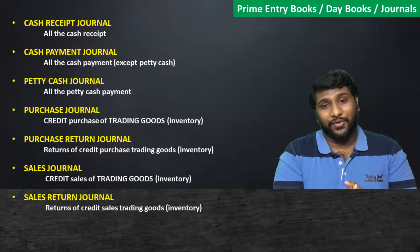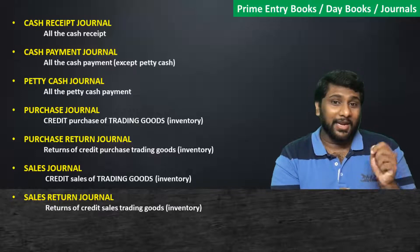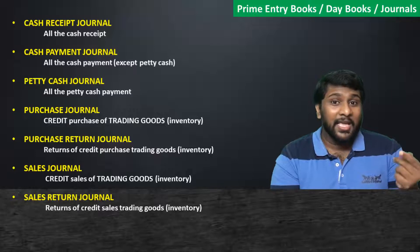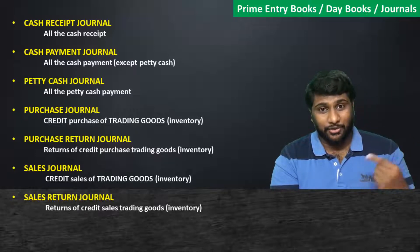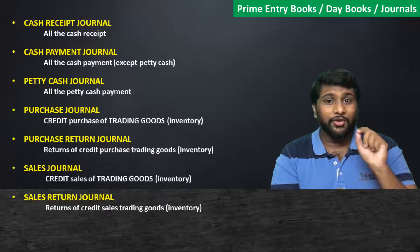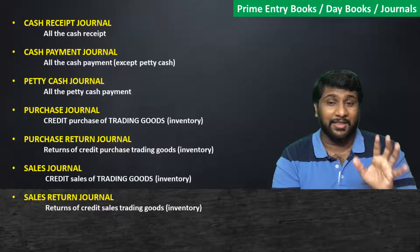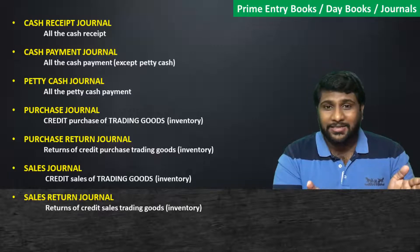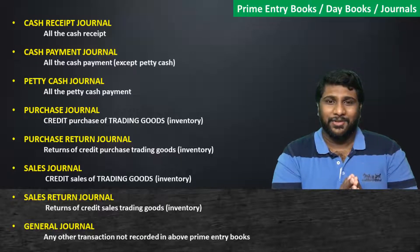You also have the sales return journal. In the sales return journal, whatever trading goods you sold on credit — if your customer returns those items back to you, those transactions should be recorded in the sales return journal for the first time.